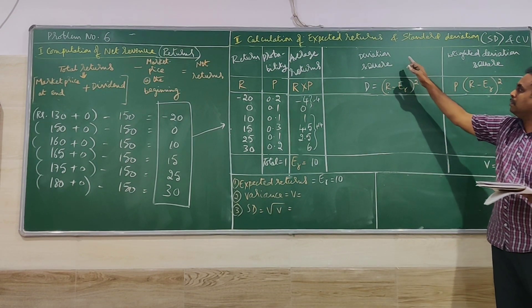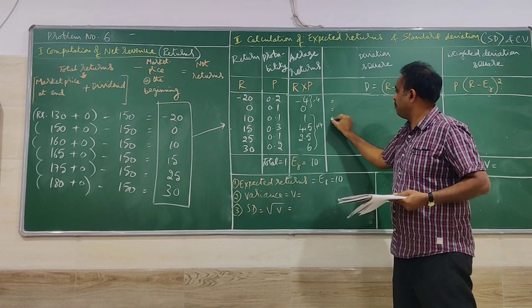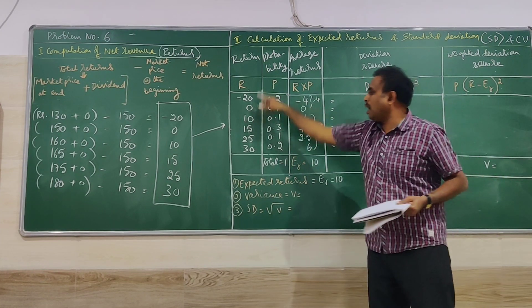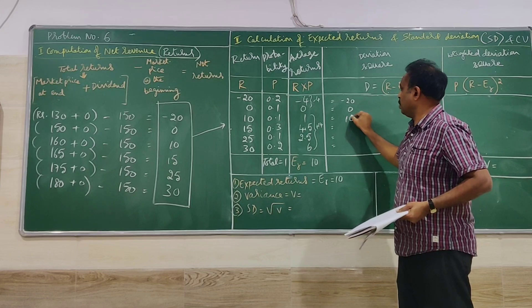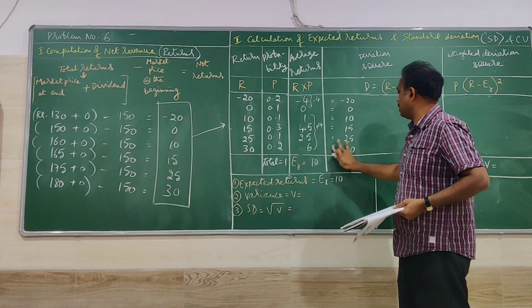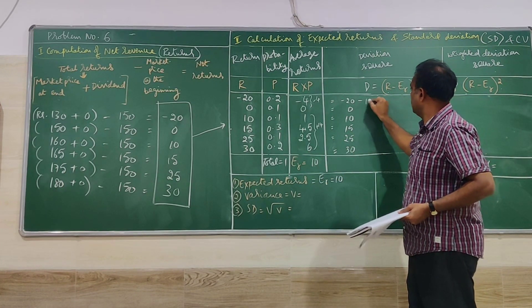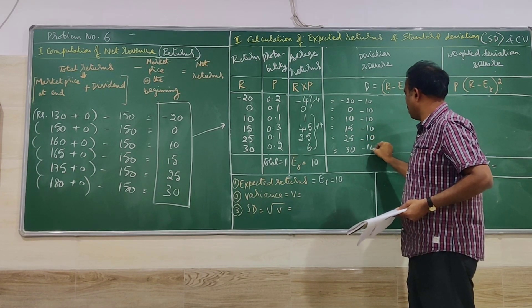Next, deviation square. R minus ER. Let me substitute the R values first. Minus 20, 0, 10, 15, 25 and then 30. Then expected returns, 10. We go for square of it.